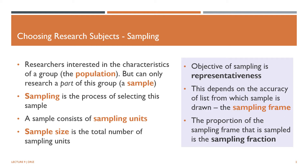Clearly, the larger the sample size, the closer it gets to the population. Because the objective of sampling is to be able to say something about the population, representativeness is the most desirable objective. It turns out that some sampling methods can ensure representativeness, while others cannot.